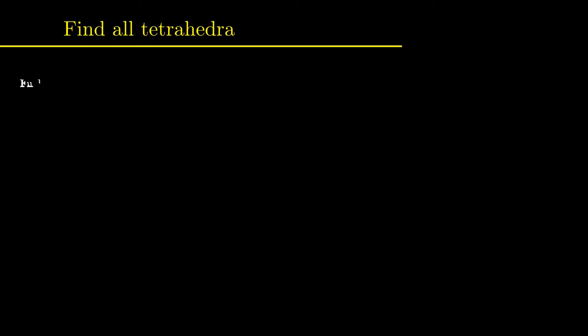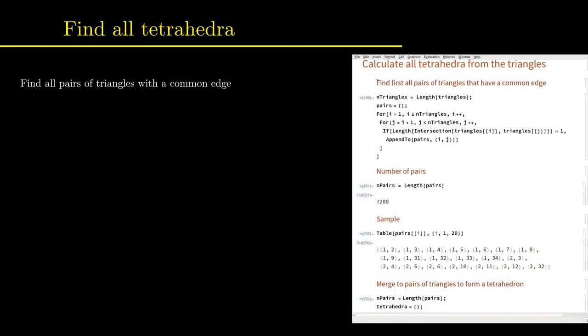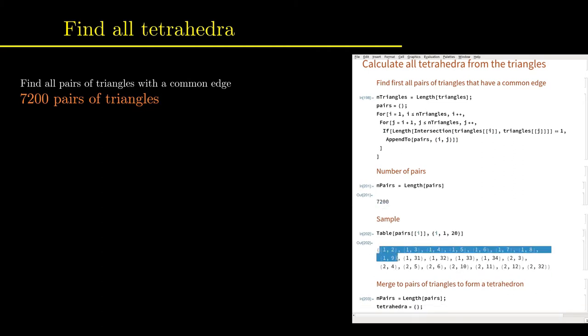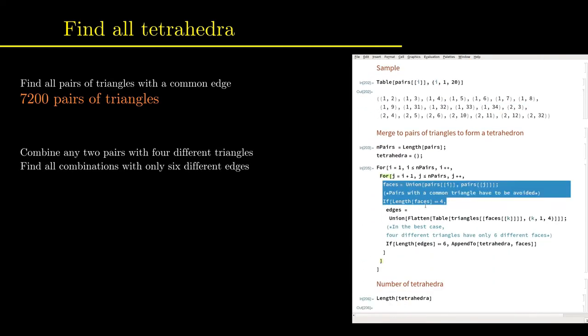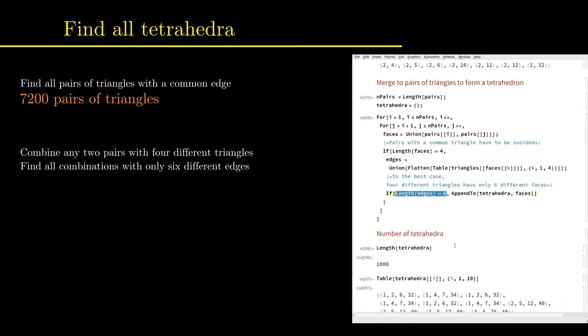It is not efficiently possible to scan through all arrangements of four triangles to find the combinations that form tetrahedra. Instead, first all pairs of triangles that share a common edge are determined. There are 7200 of them. To form tetrahedra, only pairs with four different triangles are good candidates. On top, these four different triangles have to have exactly six different edges. When these two constraints are imposed, there will be 1800 tetrahedra formed from these 7200 pairs.